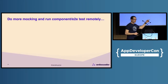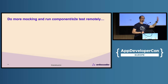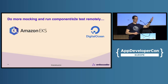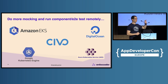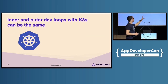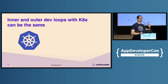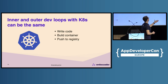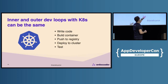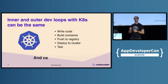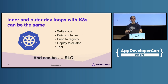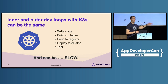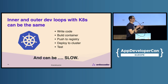People then tend to do more mocking, and rely a lot more on component or end-to-end testing. Once you get to this space, there's a danger that the inner and outer loop can become the same. You're writing some code, building a container, pushing it to a registry, deploying it to a cluster, testing, making a mistake, and the loop begins again. This can be quite slow — reminds me of old school compiling and adding print lines and redeploying.